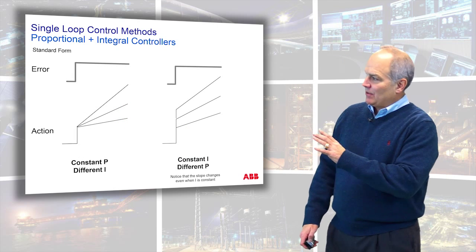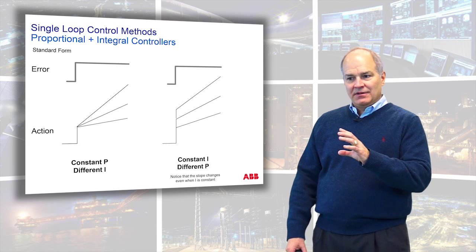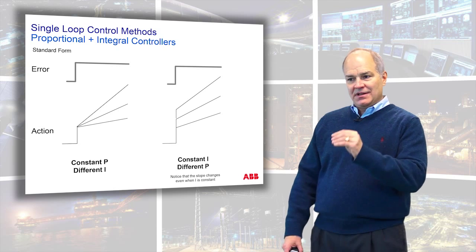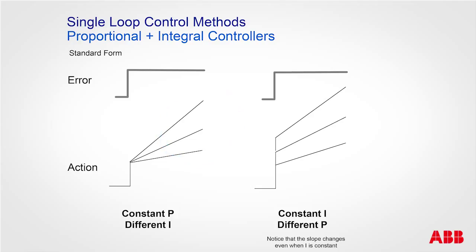Here we're talking about the relationships between proportional and integral. With a constant proportional and different integrals, if you bumped it three times the proportional kick is the same but the integral changes. Over here I have the same integral but different proportionals - this shows three subsequent bump tests overlaid on the output.